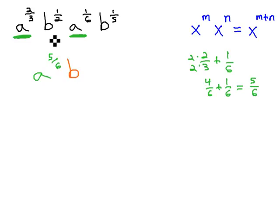We can do the same thing on the b's as we combine the b's together, adding those exponents one-half plus one-fifth. In order to add these, we need a common denominator by multiplying by five and two to give us five-tenths plus two-tenths equals seven-tenths.